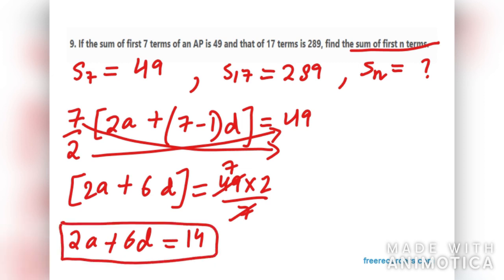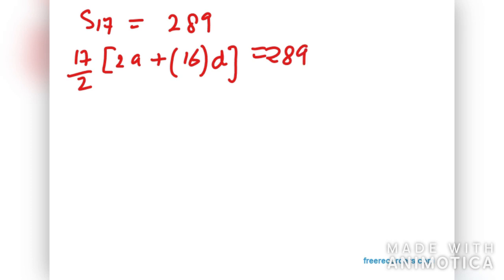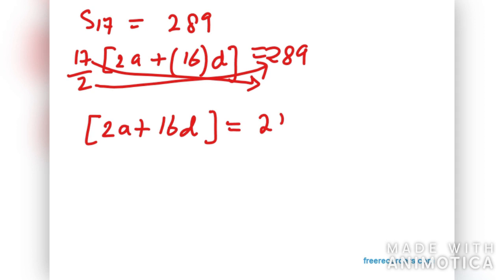Now moving on to S17. S17 can be written as 17 over 2, 2A plus 17 minus 1 which is 16D, equals 289. So 2 will come over here and 17 will come over here. 2A plus 16D equals 289 times 2 over 17. 17 times 2 is 34. So 2A plus 16D equals 34. This is the second equation.